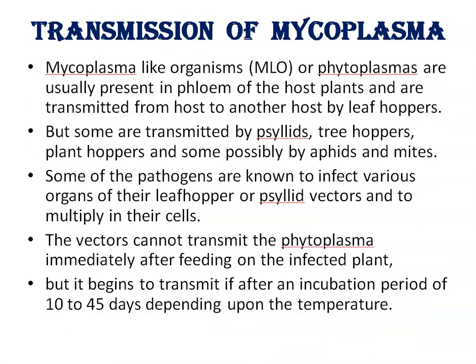Mycoplasma-like organisms or phytoplasmas are usually present in the phloem of host plants and are transmitted from one host to another by leafhoppers. Some are transmitted by psyllids, treehoppers, planthoppers, and possibly by aphids and mites. Some of these pathogens are known to infect various organs of leafhoppers or psyllids and multiply in their cells. Vectors cannot transmit phytoplasma immediately after feeding on an infected plant, but begin to transmit after an incubation period of 10 to 45 days depending on the temperature.